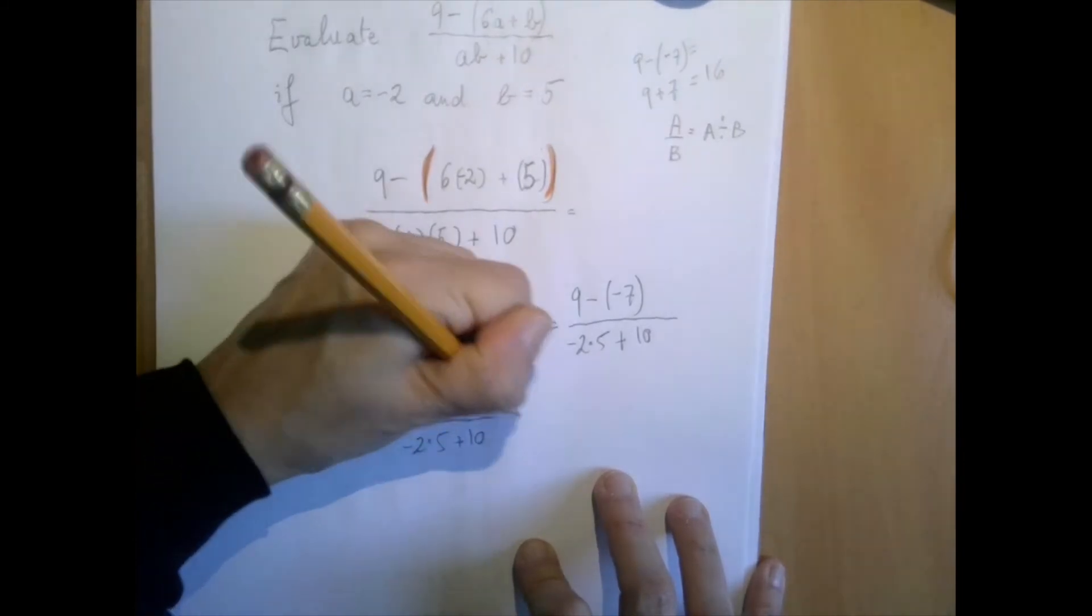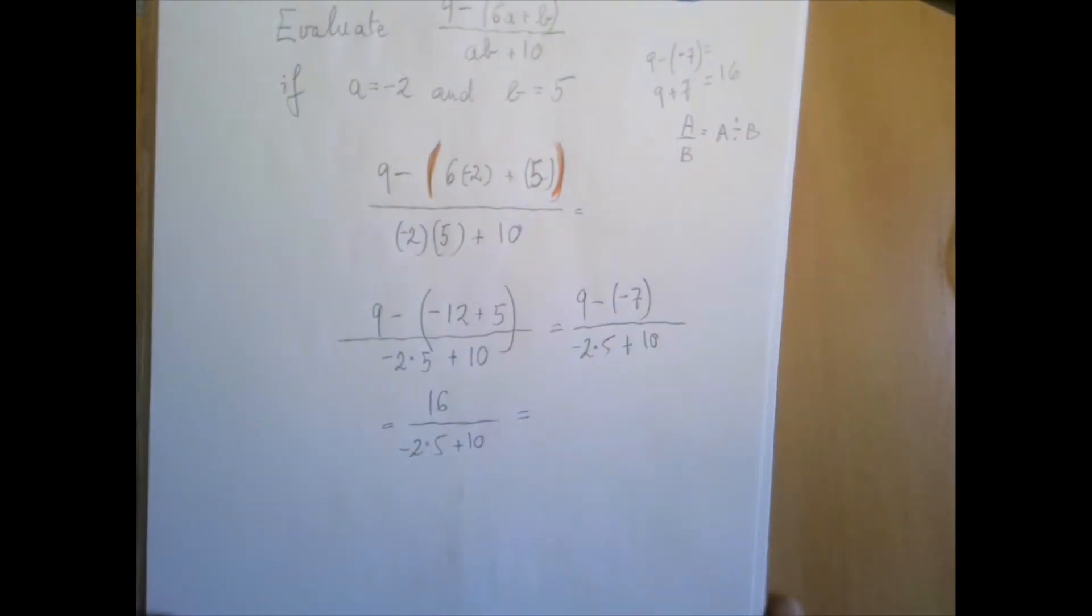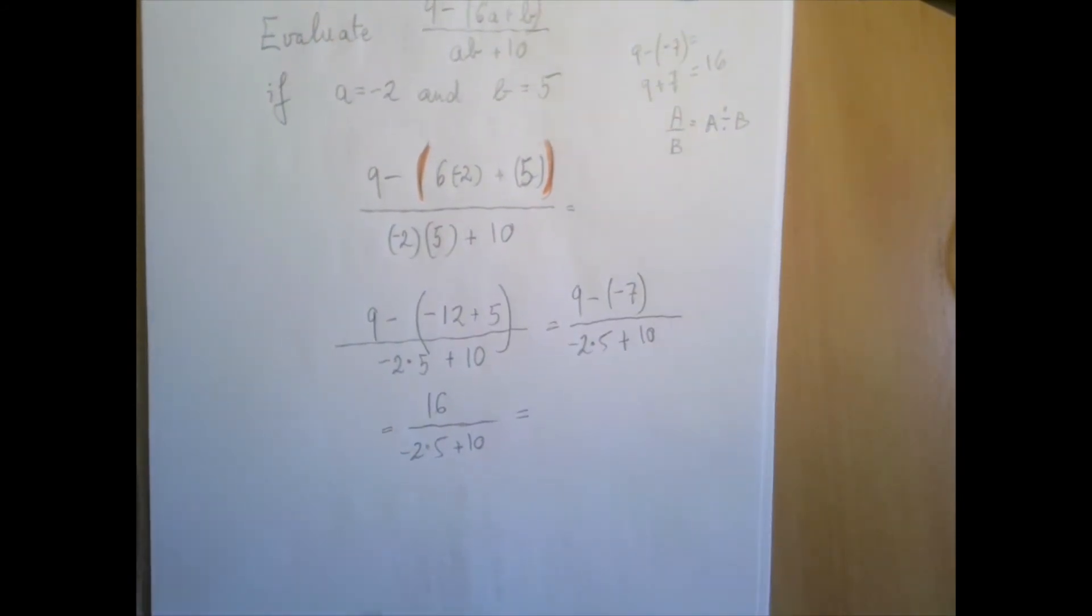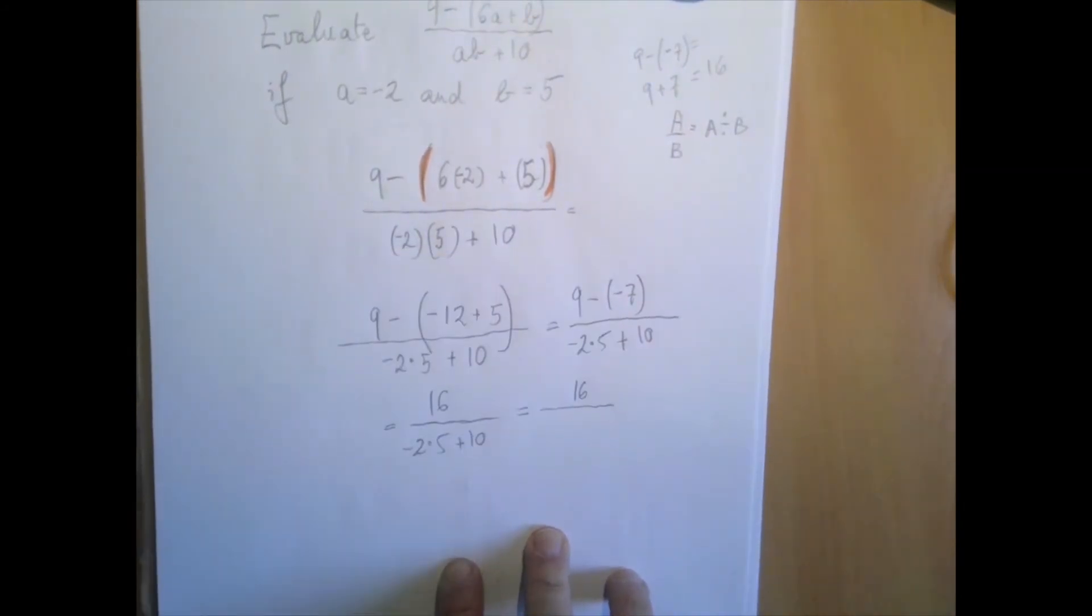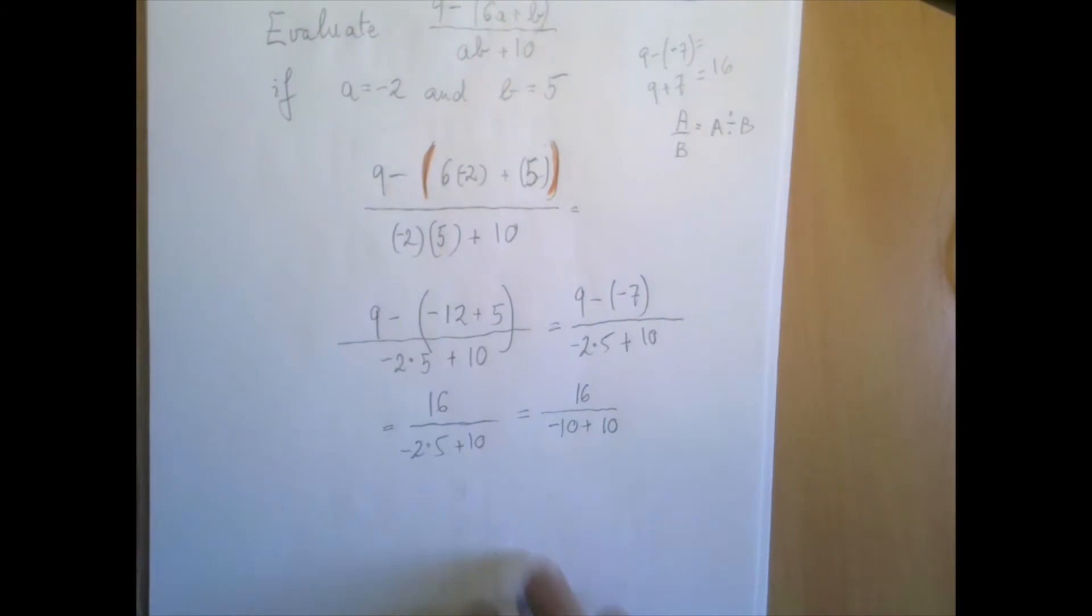So finally, we can start working on the expression downstairs. We have a multiplication and addition. Multiplication is stronger, so we start there. Negative 2 times 5 is negative 10. So now downstairs, we have the addition negative 10 plus 10.